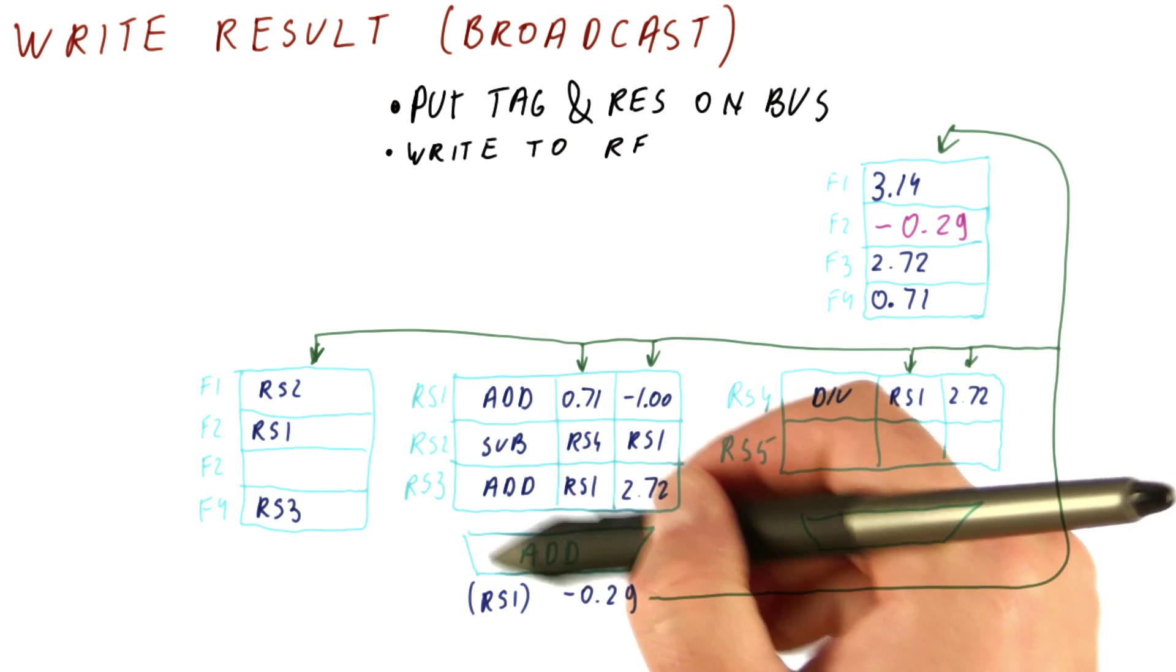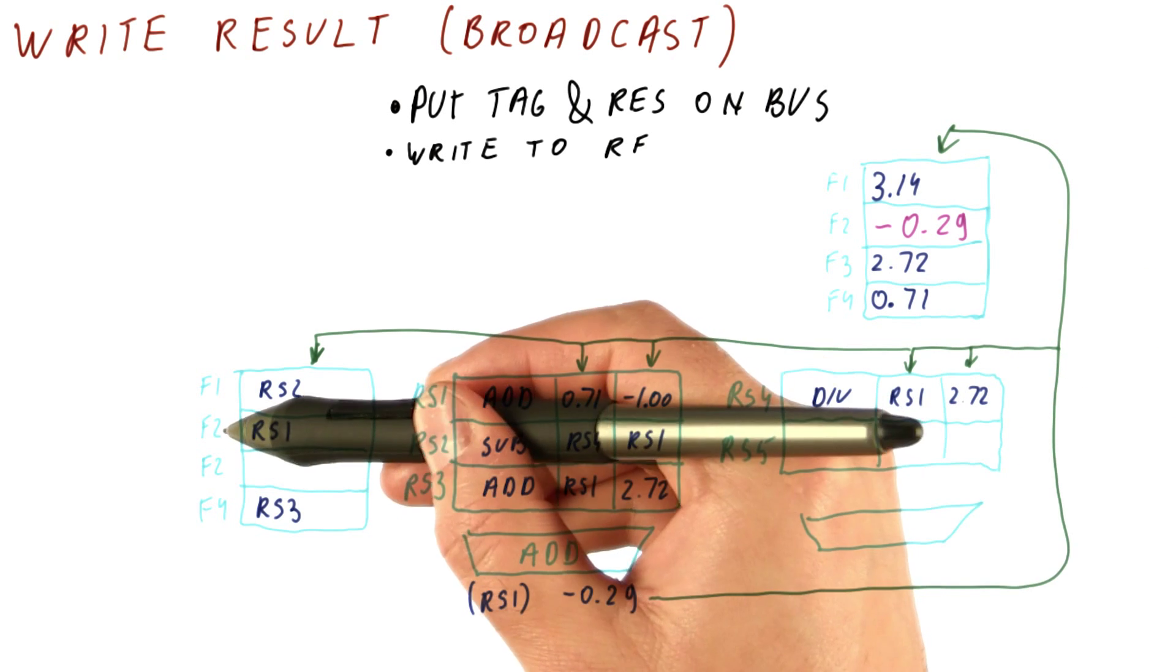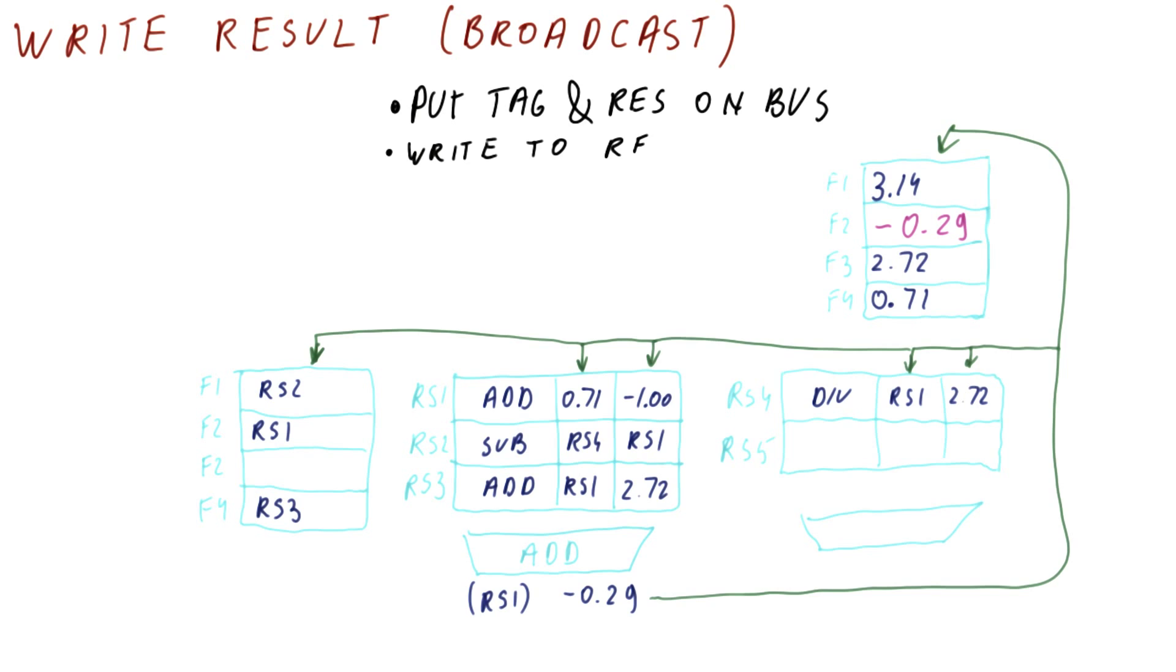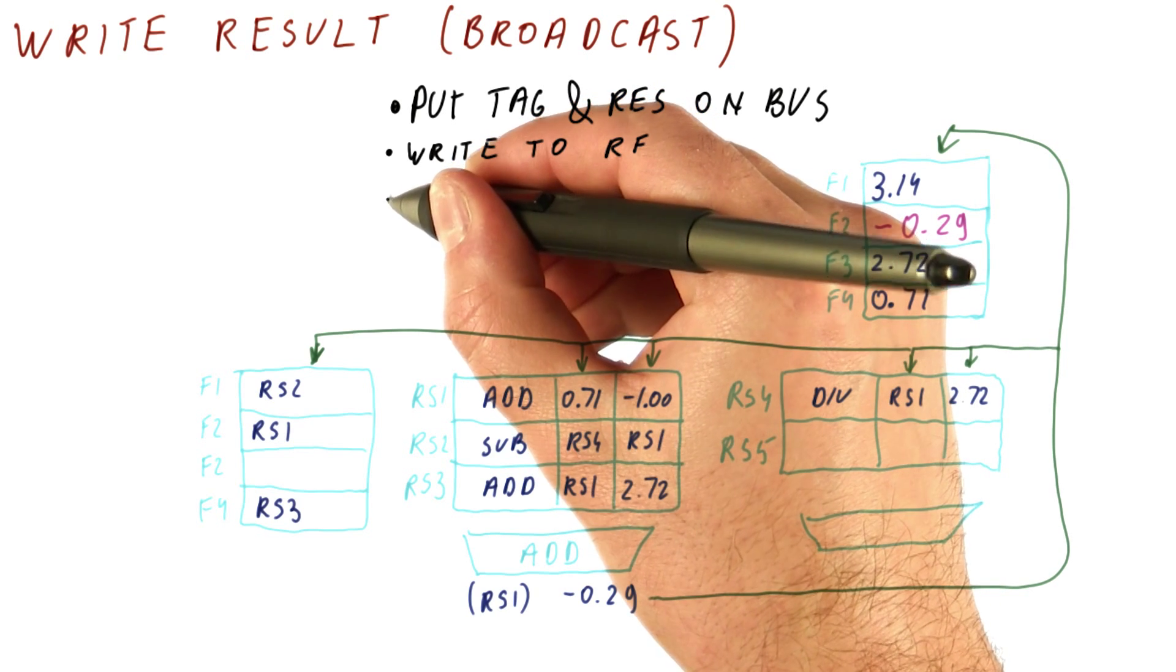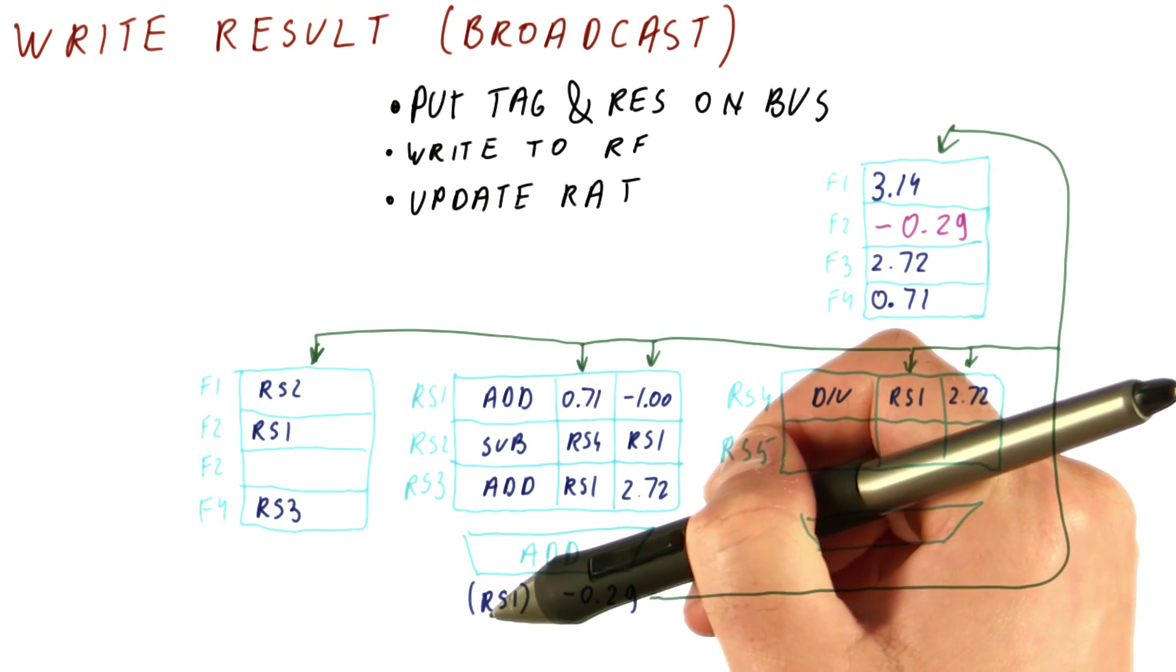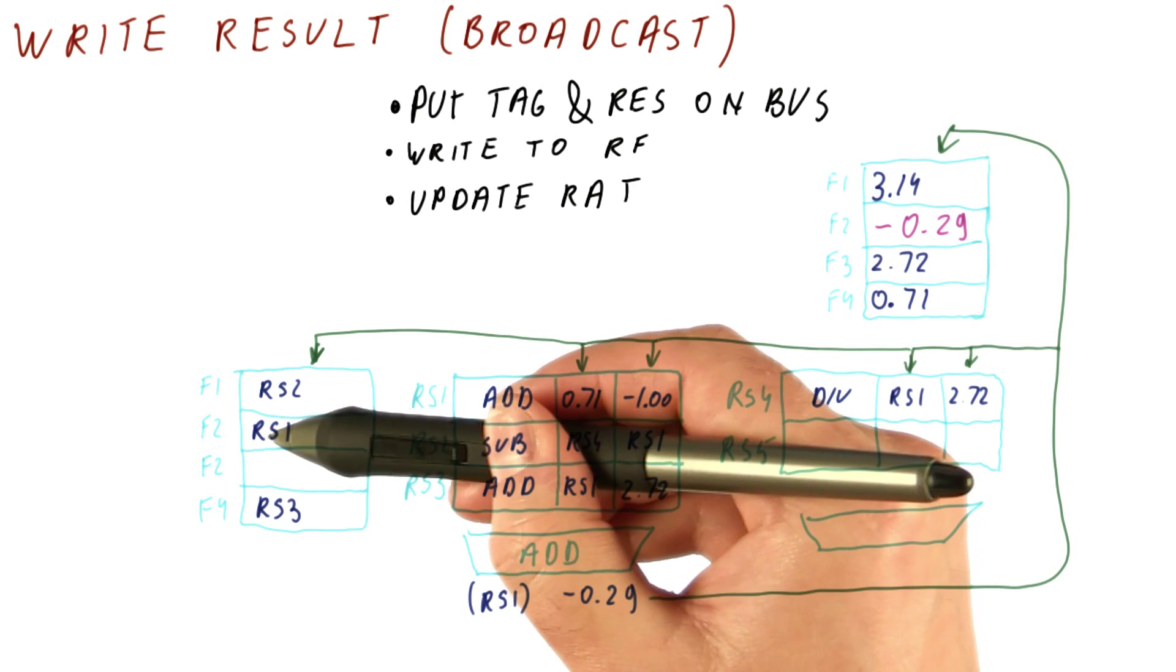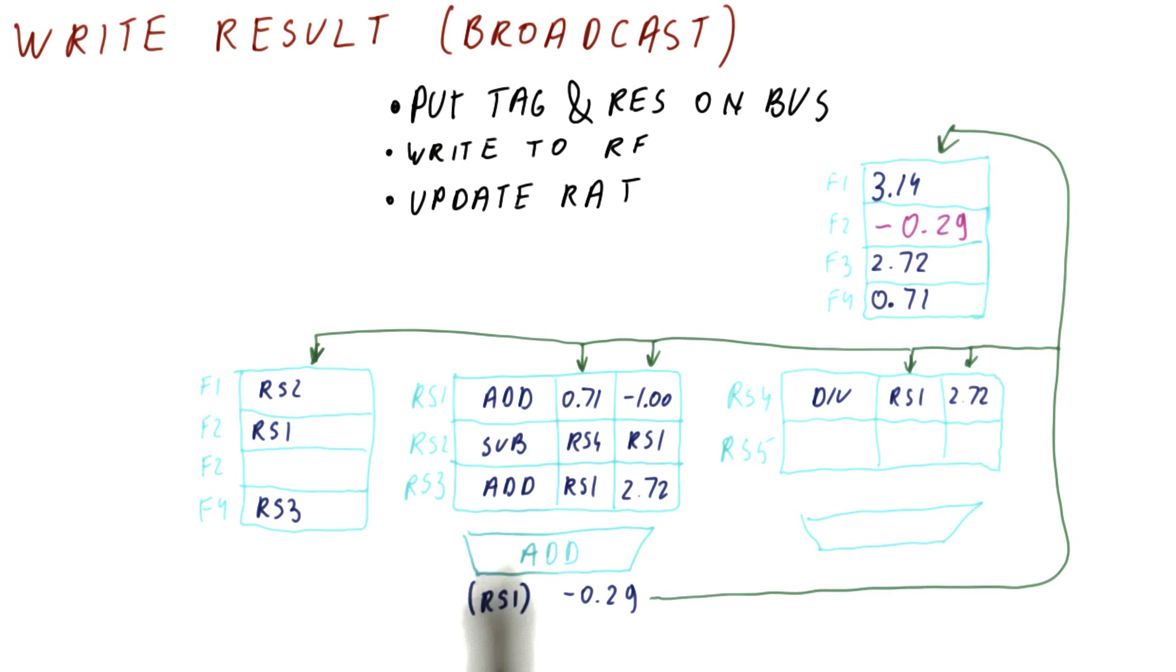Because of this match between the RAT and RS1, we know that F2 should be written with this value. The next thing that happens is we update the register allocation table. The entry that matches our tag needs to be changed so that it now points to the register file.